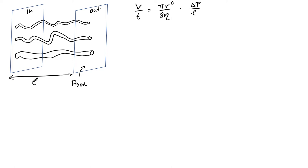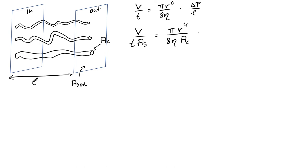We are going to do a little trickery: divide both sides of the equation by an area. The trickery is that the area is different on each side — on the left we divide by the area of soil, giving volume per time per area of soil, while on the right we divide by the area of the individual conduits, meaning the area of capillaries only. The driving gradient is left alone for now but will be rearranged soon.